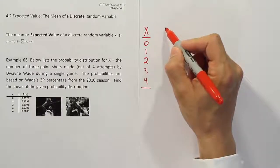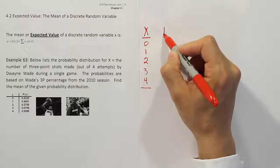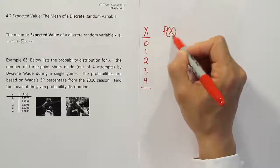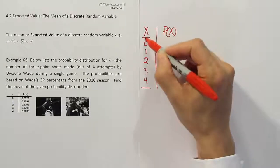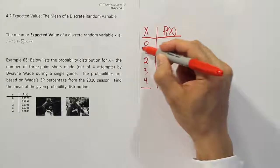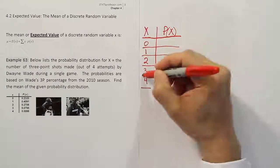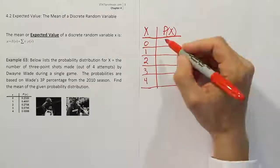So those are all the possible outcomes. Now from there, we're going to go ahead and list the probability that those events occur, and again, they've given us these probabilities based on Wade's historic percentages.